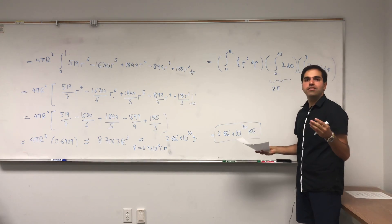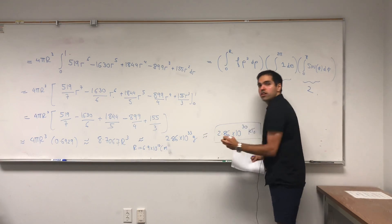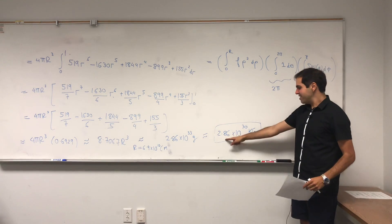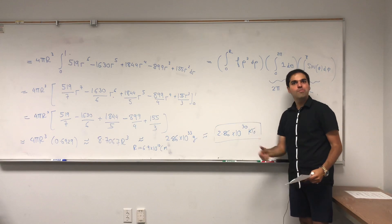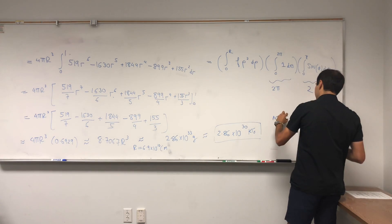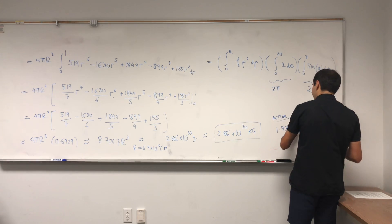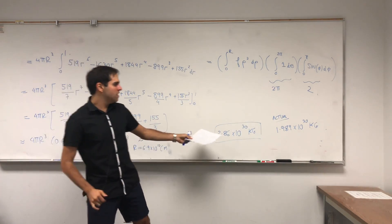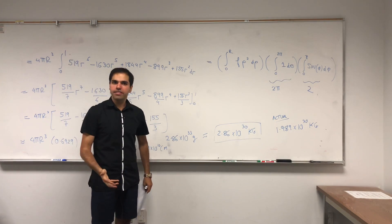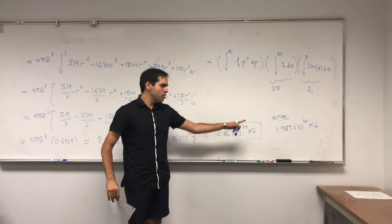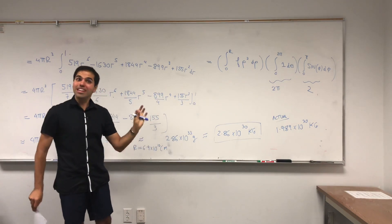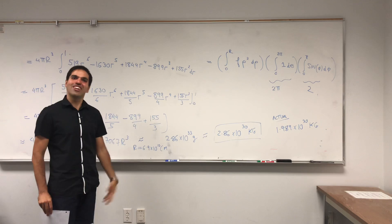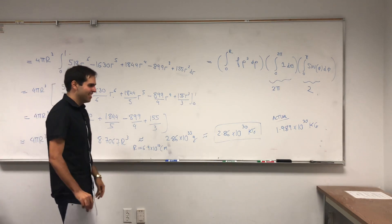The actual measured mass of the Sun is 1.989 times 10 to the 30 kilograms. Not bad at all — we're in the same order of magnitude, and the numbers are off by less than 1, which is pretty precise. So good job NASA for the model, and good job math for giving us spherical coordinates that help us calculate the mass of the Sun.